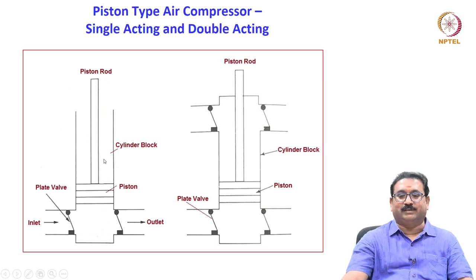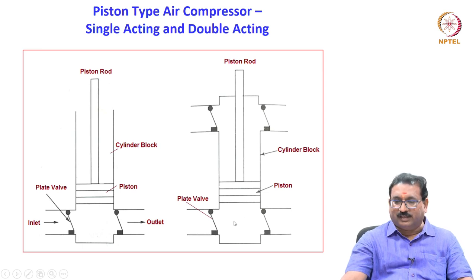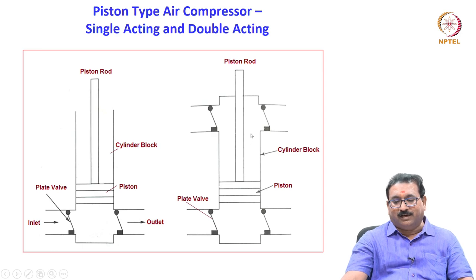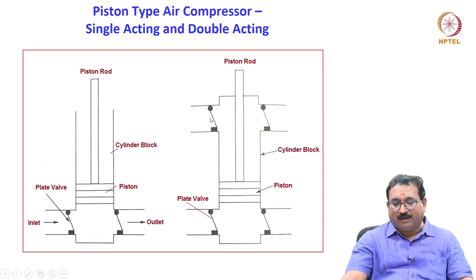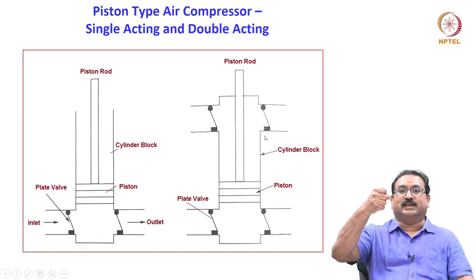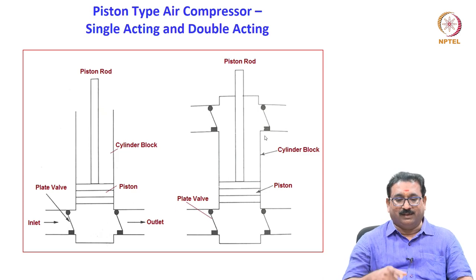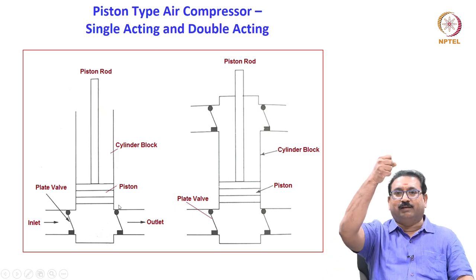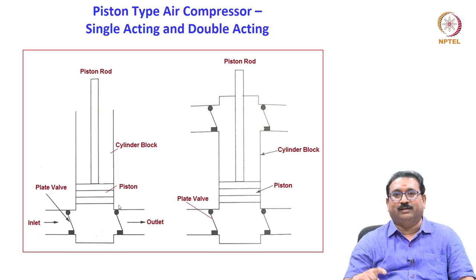Suction and discharge take place in one direction. In another case — again it is a piston and cylinder arrangement — when the piston is taken out, air enters through one side and whatever air is present on the other side exits. When you push in, air enters here and air is discharged there. This is called a double acting type. In single acting, suction and discharge occur once per cycle, but in double acting, suction and discharge occur two times per cycle.